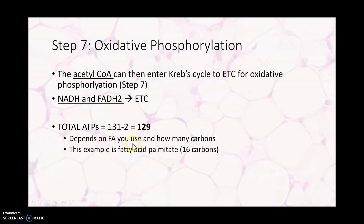We can get 131 ATPs out of one fatty acid molecule, but we have to subtract two because during the activation step we need to use two ATPs. So the net gain is around 129 ATPs from one fatty acid molecule. This will also depend on which fatty acid you use and how many carbons it has. This example uses fatty acid palmitate, which has 16 carbons — putting those 16 carbons into this equation gives us 131 ATPs, minus two used for activation, for a total of 129.